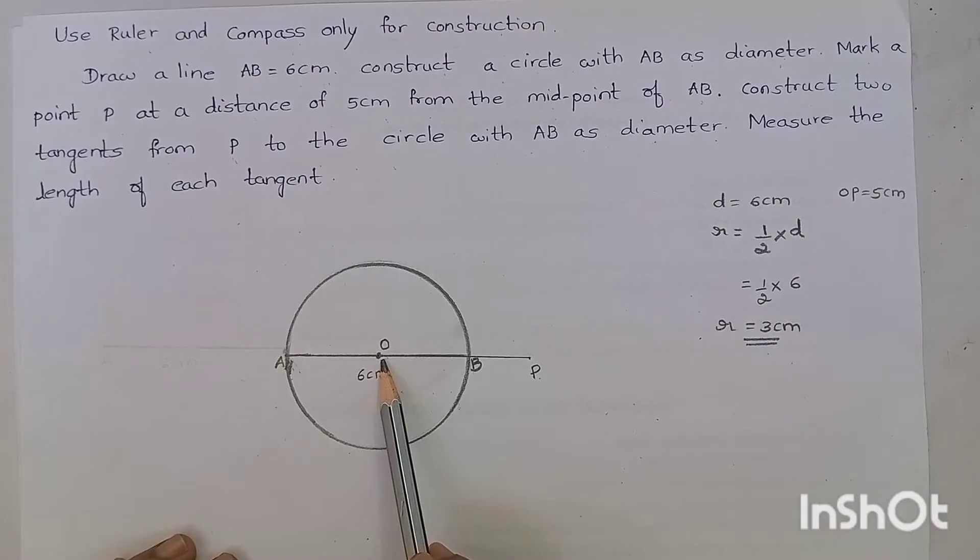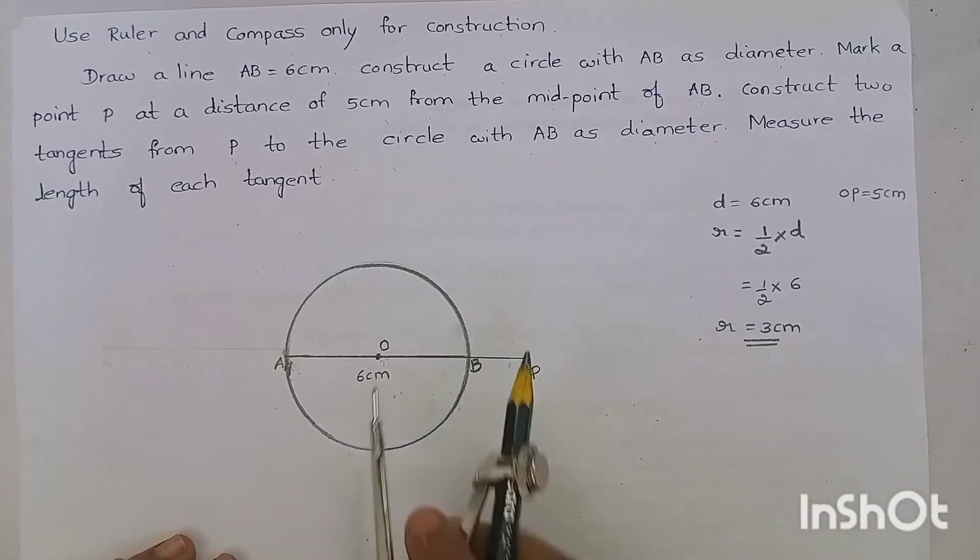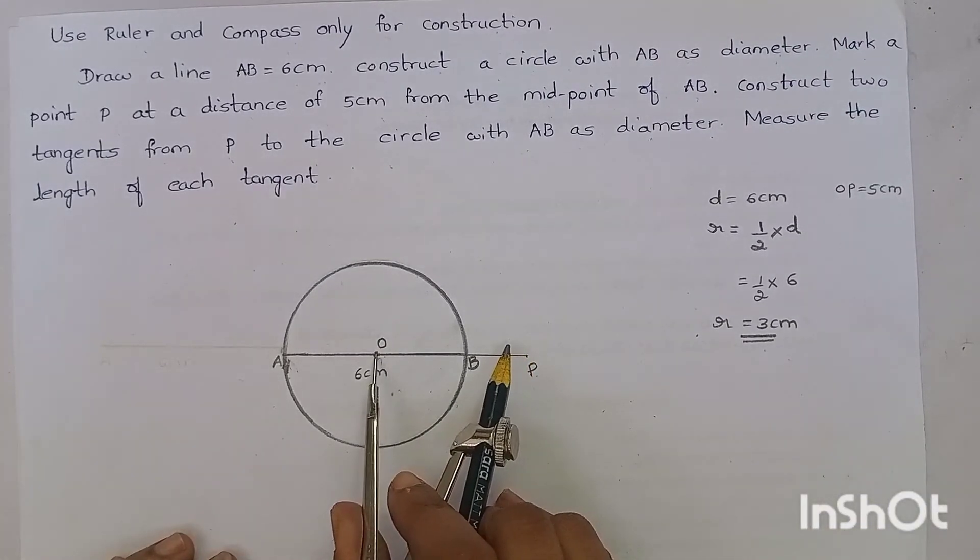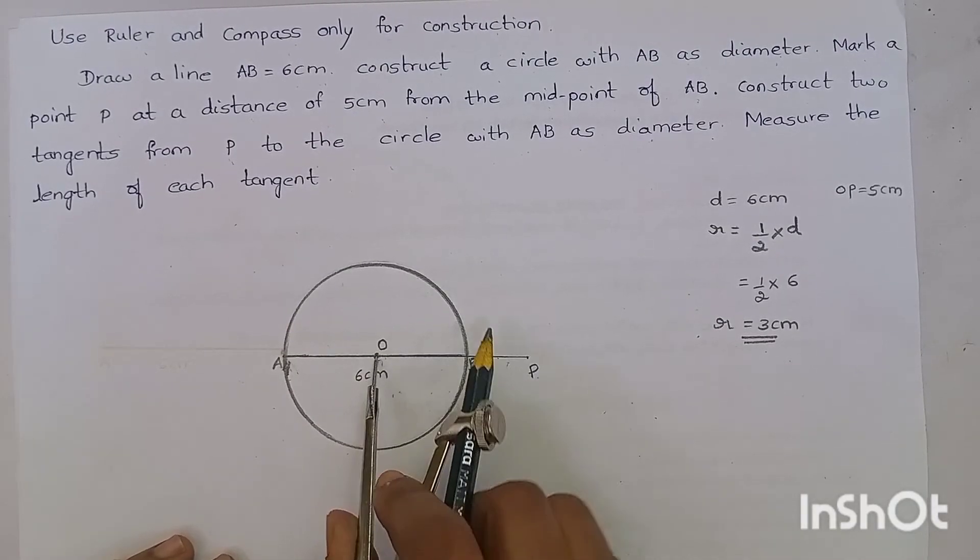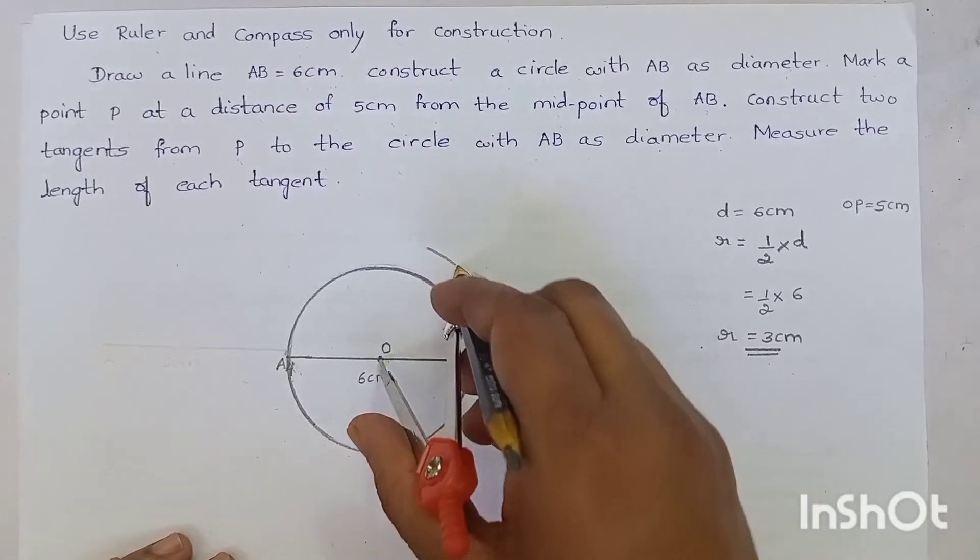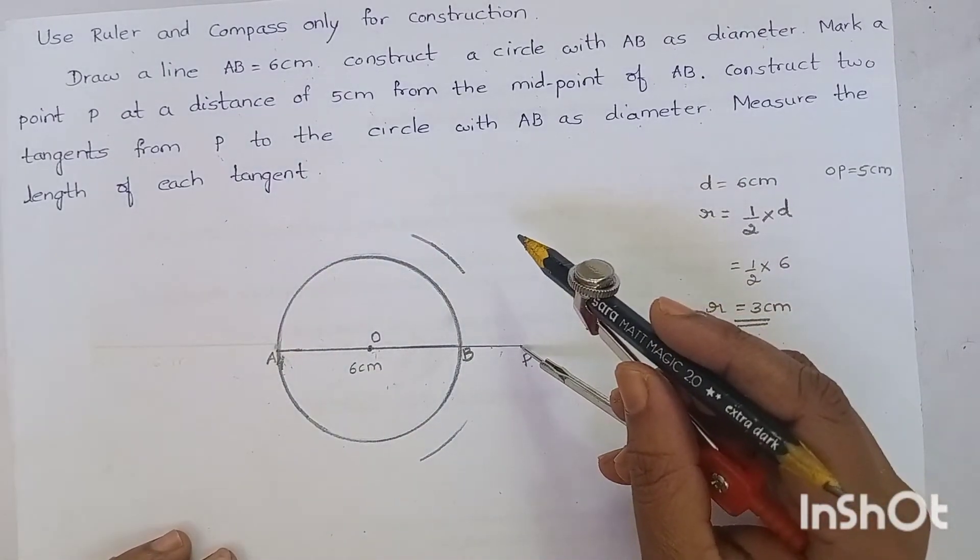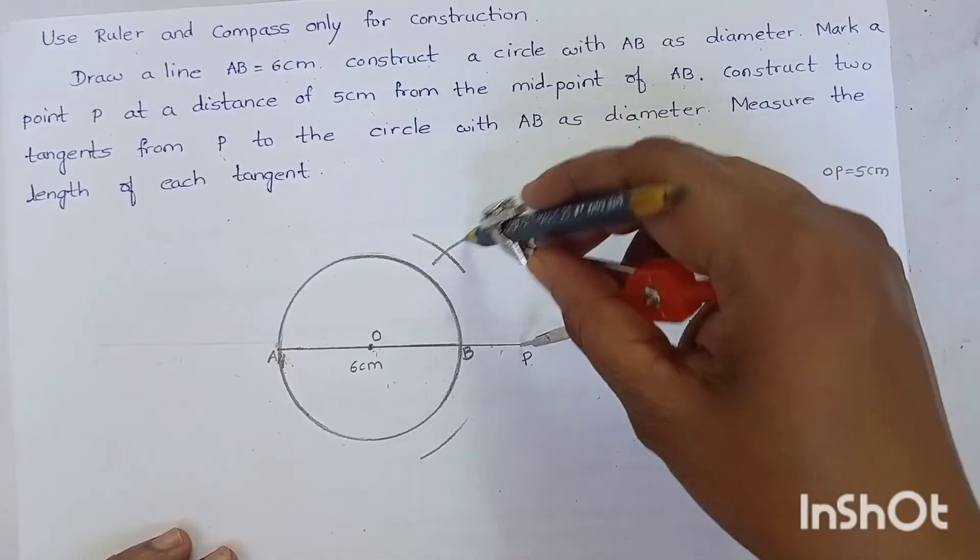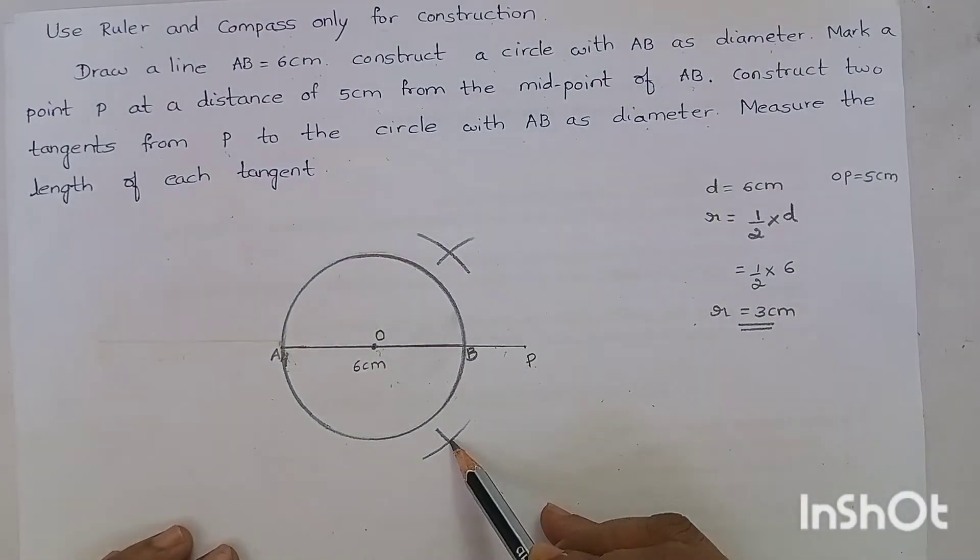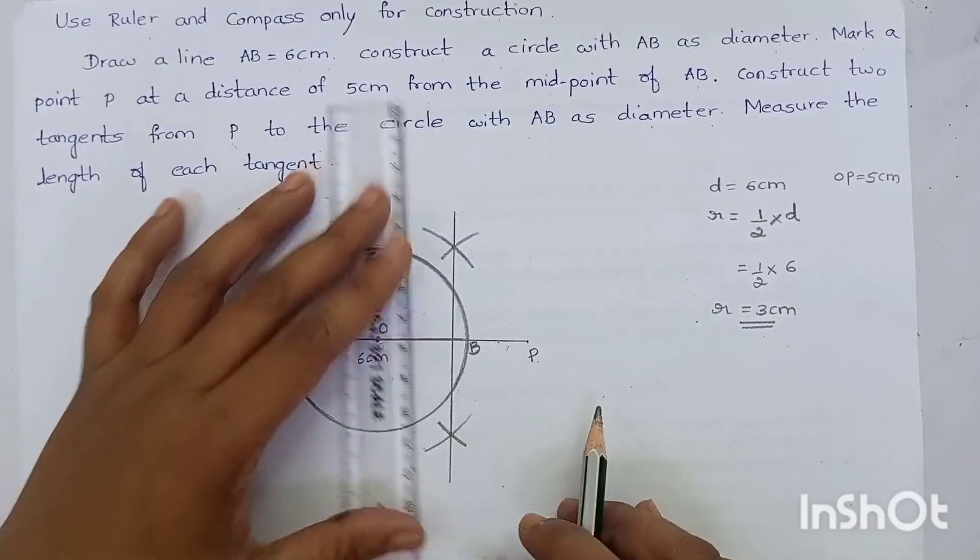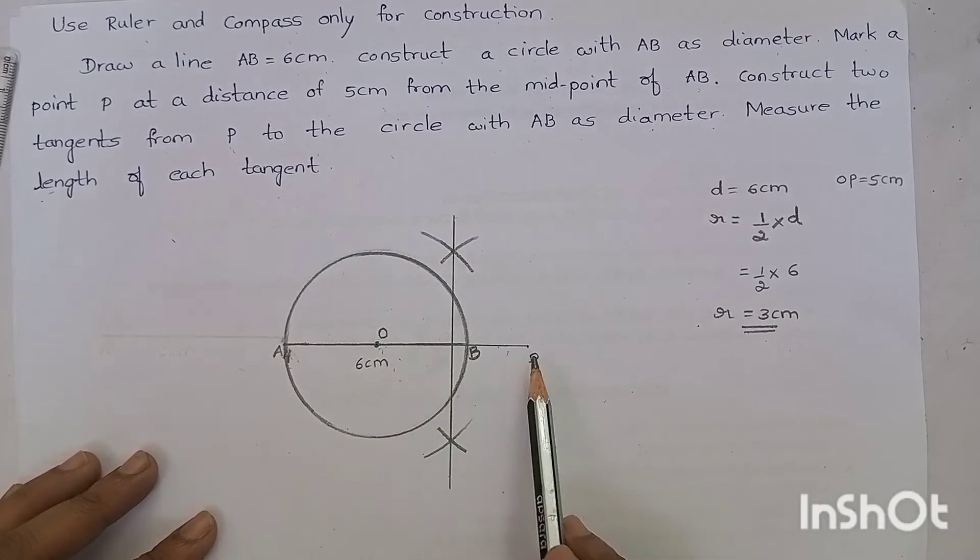We have to take more than half of OP. Okay? See, this is more than half of OP. Then, from the point O, mark an arc. Then, from the point P, mark an arc. Join these two points. We have constructed a perpendicular bisector for OP.